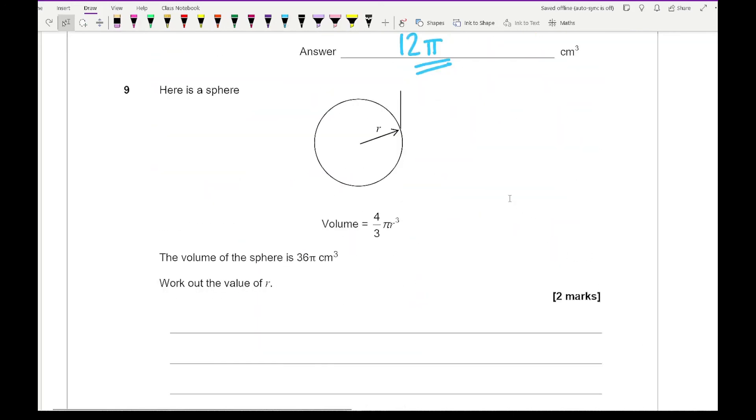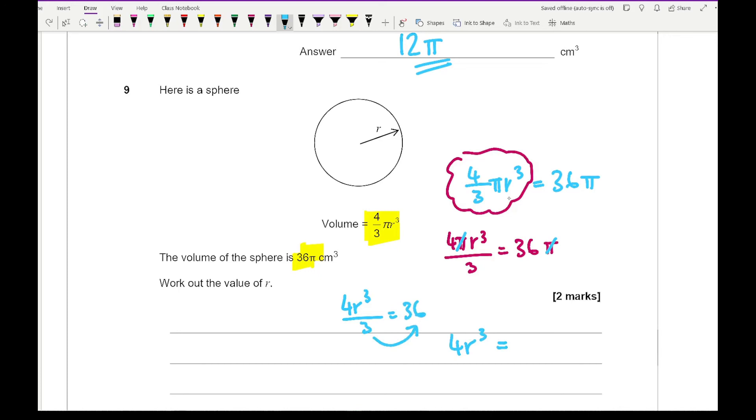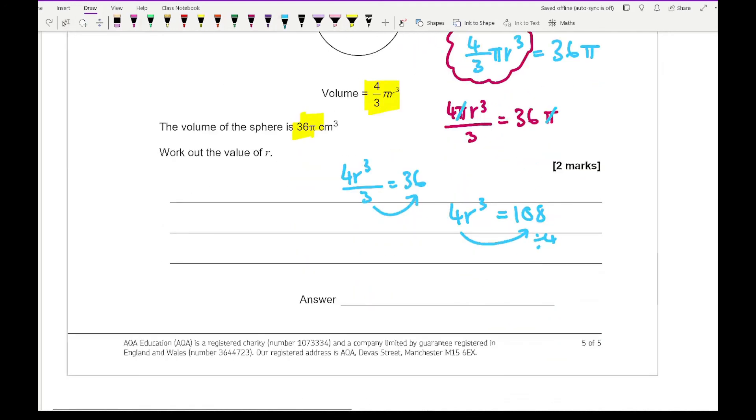Then moving on to our last question, it says here is a sphere. The volume of the sphere is 36 pi cm cubed. Work out the value of R. So all I need to do is just make this equal to this. So here I've got 4 over 3 pi R cubed equals 36 pi. And what I can do with this particular formula, what you might find easier is writing it as 4 pi R cubed over 3 equals 36 pi, and then I can cancel out the pis. And so what I'm left with is 4R cubed over 3 equals 36. I take the 3 over, so I've got 4R cubed equals 36 times 3, and 36 times 3 is 108. I then divide by 4, in which 108 divided by 4 is 27. So R cubed equals 27. And what cube gives you 27? Well that's going to be 3, and there is my final answer and the last question on this volume topic test.